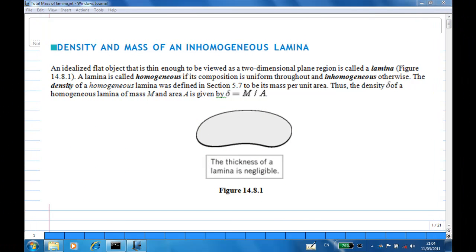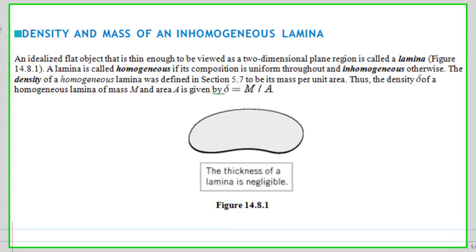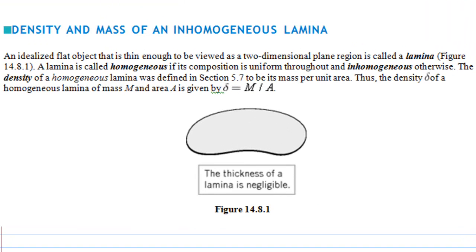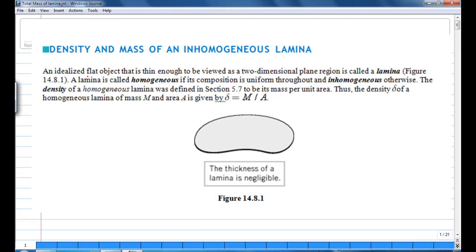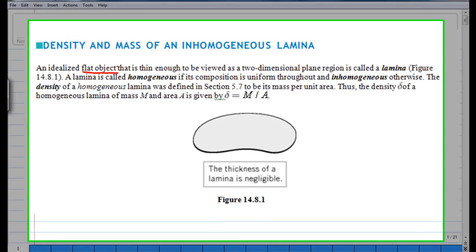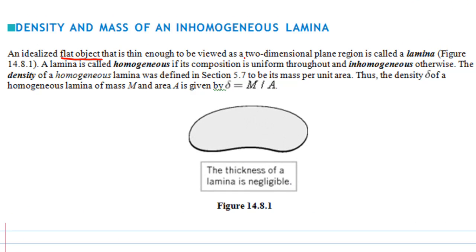Hi, this video will show you how to compute the mass of an inhomogeneous lamina. A lamina is a flat object which is thin enough to be viewed as a two-dimensional plane region, and we call this a lamina.